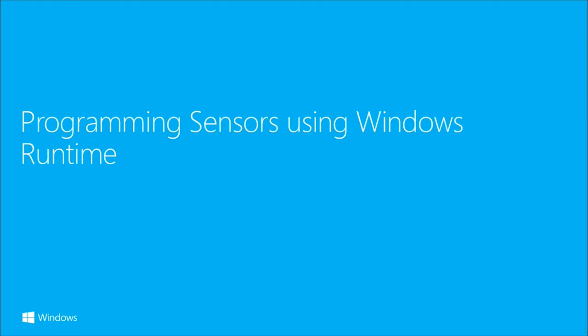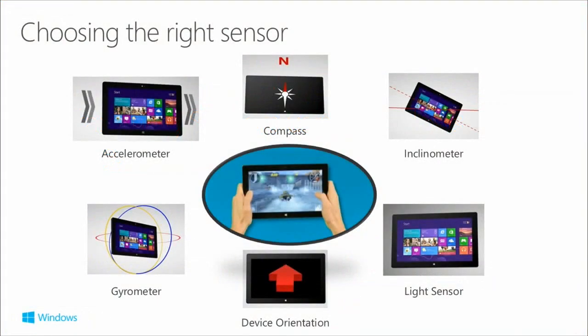First of all, just very briefly looking at the different sensors and how you work with them - this is using the Windows Runtime APIs. We have lots of sensors, though not every device will have all of those sensors. This is a converged API, so as you can see we've got a tablet shown, but these are available obviously on the phone as well. Compass, accelerometer, gyrometer, orientation, light sensor, and inclinometer.